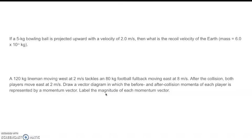Now we're going to put some math with this stuff. So this one goes along with the last question, if a five kilogram bowling ball is projected upward with a velocity of two meters per second, then what is the recoil velocity of the earth? And the mass of the earth is six times 10 to the 24 kilograms. Do it now. And a 120 kilogram lineman moving west at two meters per second tackles an 80 kilogram football fullback moving east at eight meters per second. After the collision, both players move east at two meters per second. Draw a vector diagram in which the before and after collision momenta of each player is represented by a momentum vector, then label the magnitude of each momentum vector. A lot to think about there. All right. Do it now.